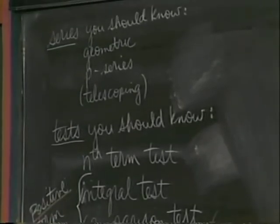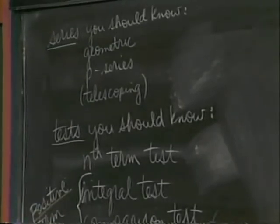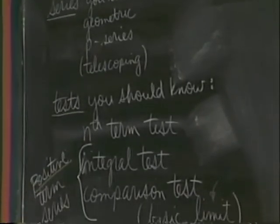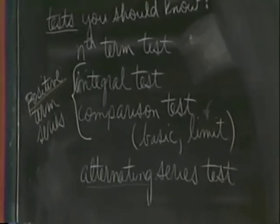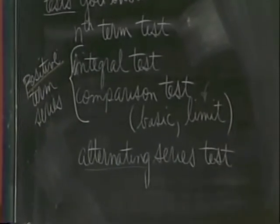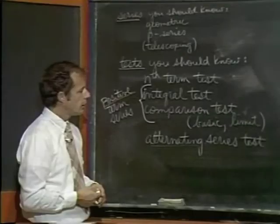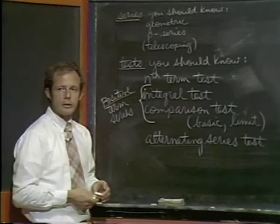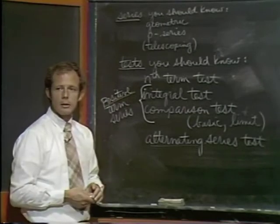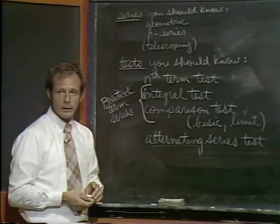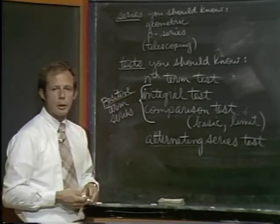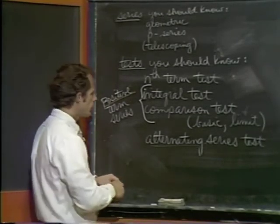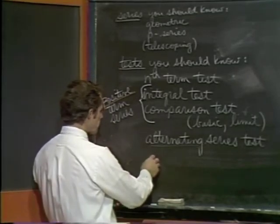The alternating series test we looked at last time. Roughly, it said that if you had a series where the sign alternates back and forth, then it's quite easy to check whether or not that series converges. We'll get back to that, but let's go on to some other things.